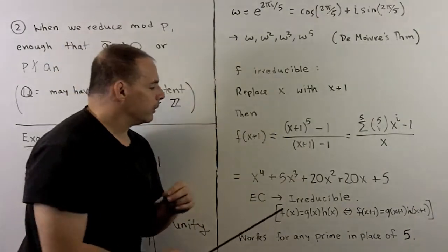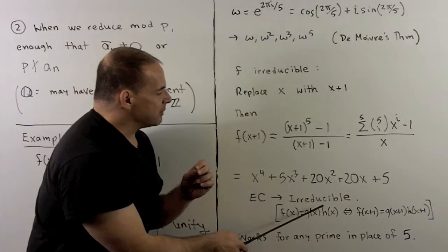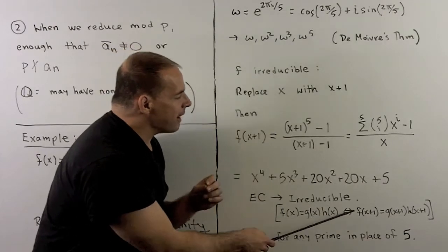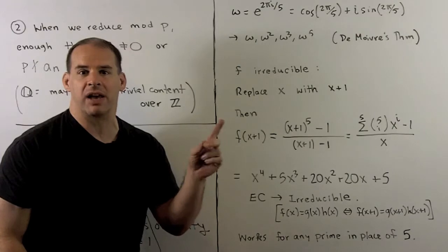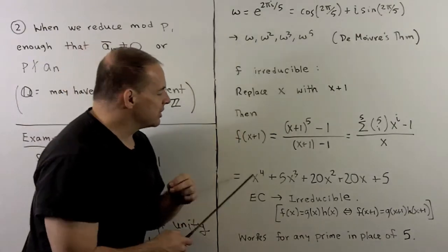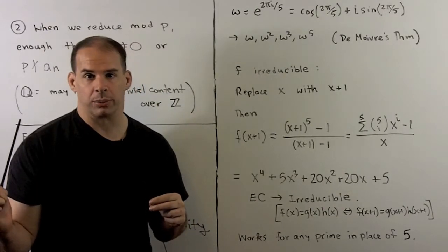Now, what we do, we're just going to do a switch. So if we could factor f as g times h, I would be able to factor f evaluated at x + 1 as g(x + 1) times h(x + 1) and vice versa. So since this is irreducible, that means our original polynomial is irreducible.